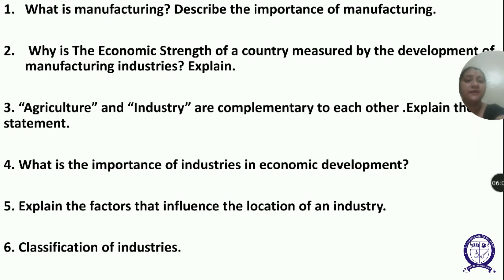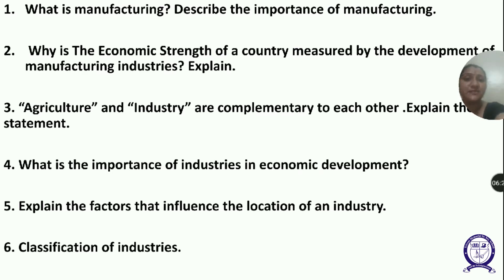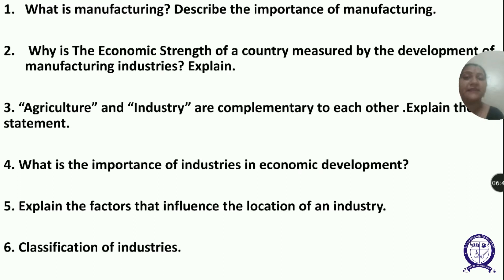Fifth is transport — a good transport network helps reduce costs and makes movement of raw materials and finished goods easier. Sixth is market — an accessible place to sell the product is essential for the location of industry. Seventh is government policies — industrial development is encouraged in some areas and restricted in others; industries in deprived areas may receive financial incentives such as low rent and tax rebates.